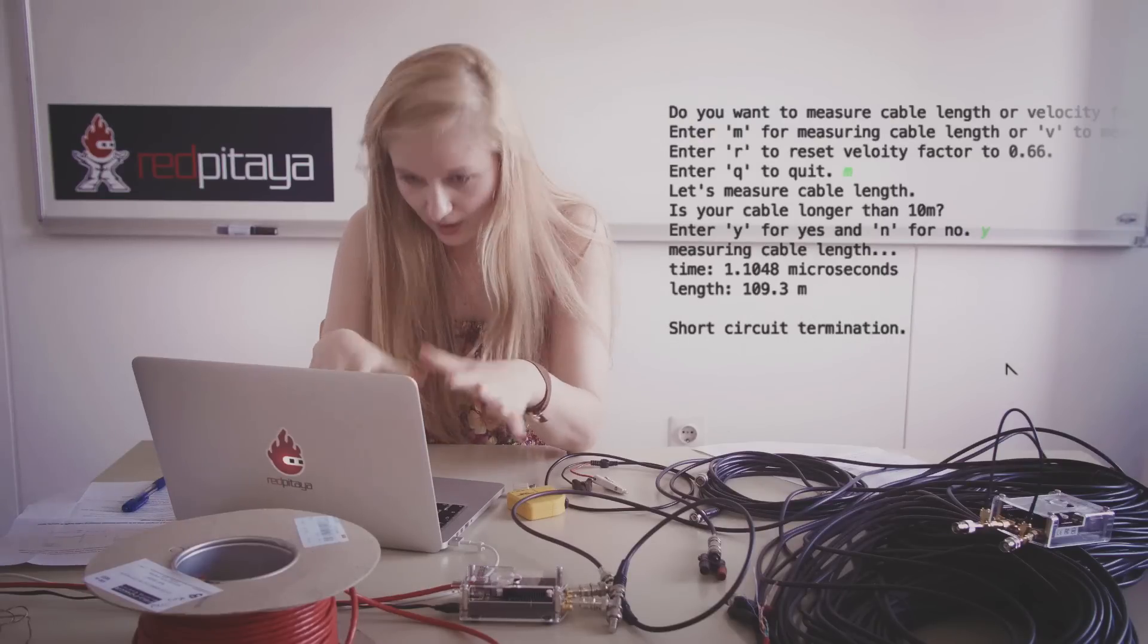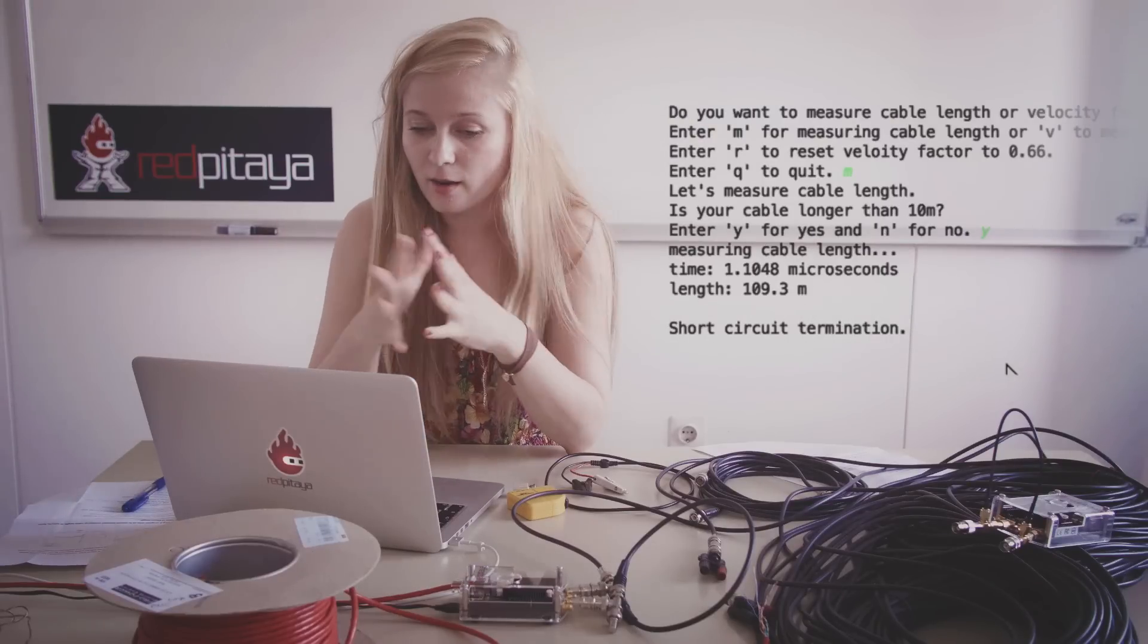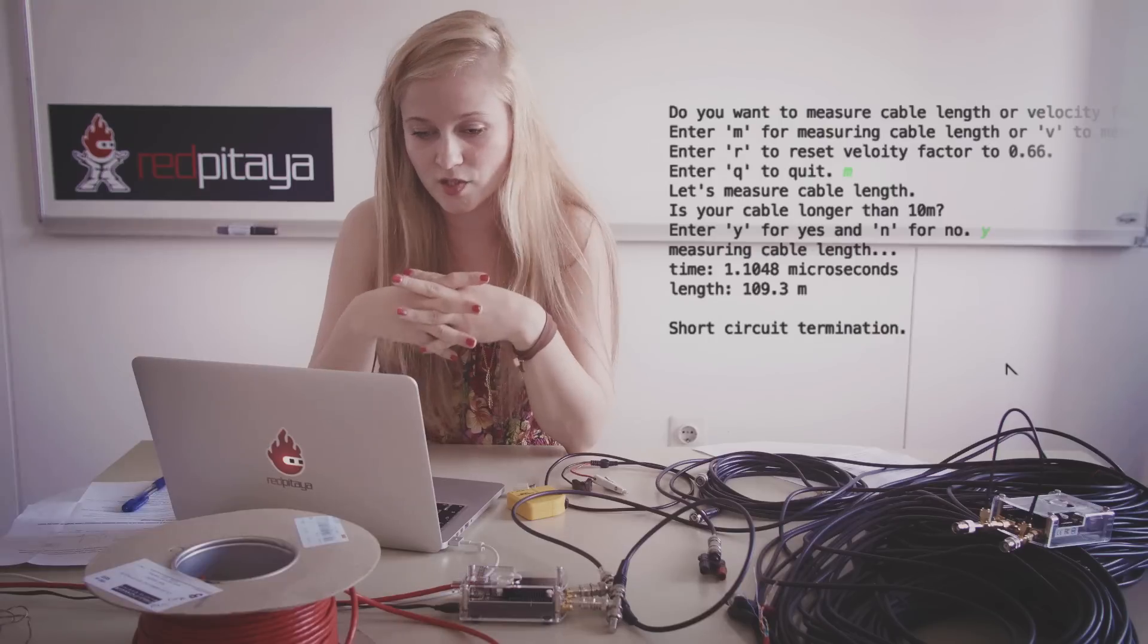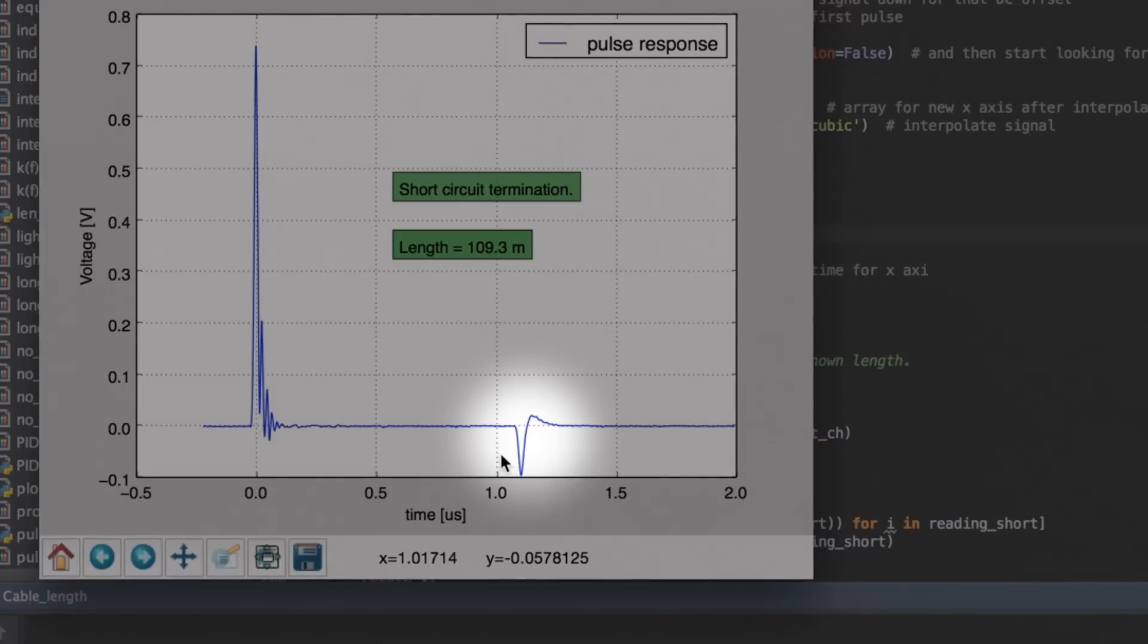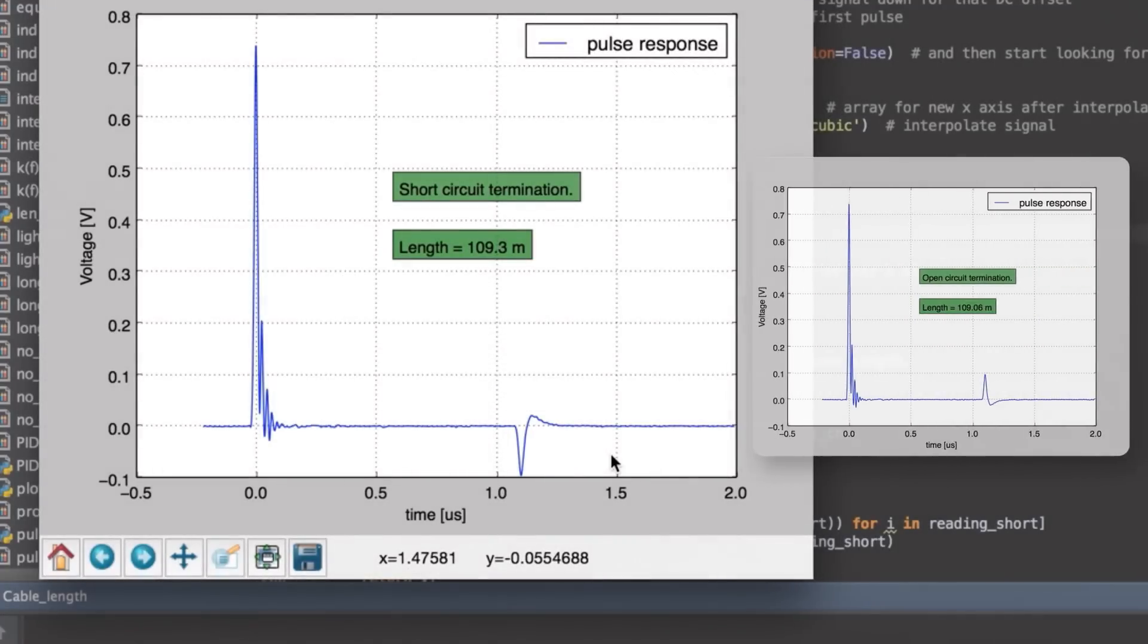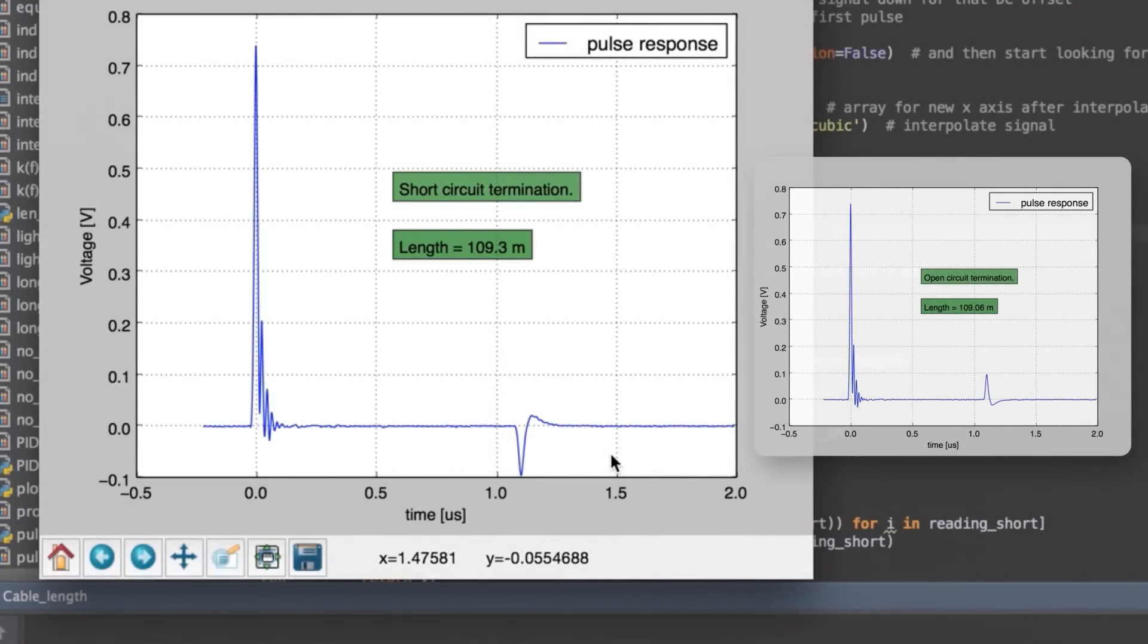Here we have actually the same length. The difference is that it's terminated with short circuit. As we can see here, the difference is just in a reflected pulse polarity. See here we have a negative reflection.